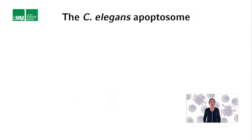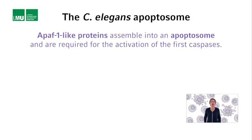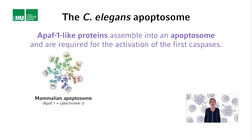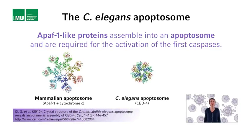APAF1-like proteins are required for the activation of the first caspases in both pathways. And in both pathways, these proteins assemble into an apoptosome, which is required for the activation of the caspases. I told you about the structure of the mammalian apoptosome as determined by cryo-electron microscopy of single apoptosome particles at a resolution of 12.8 angstrom. In 2010, Yigong Shi and co-workers published a crystal structure of the C. elegans apoptosome at a resolution of 3.55 angstrom, so with much better resolution and therefore more detailed structural information.